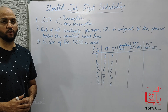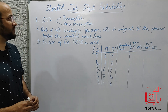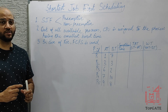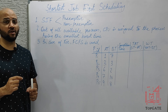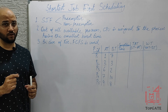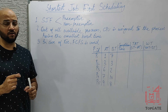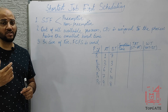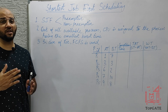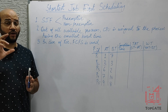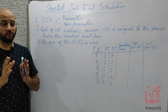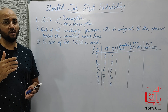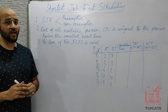Welcome to the channel Top Gate. In this video I will discuss the next CPU scheduling algorithm called Shortest Job First (SJF). In the previous lecture I discussed FCFS scheduling and the problem associated with it — the convoy effect, where processes with shorter burst time wait for processes with higher burst time, which increases waiting time significantly.